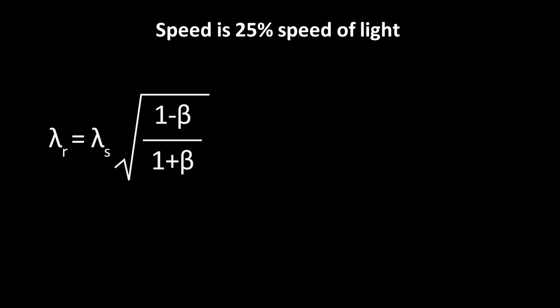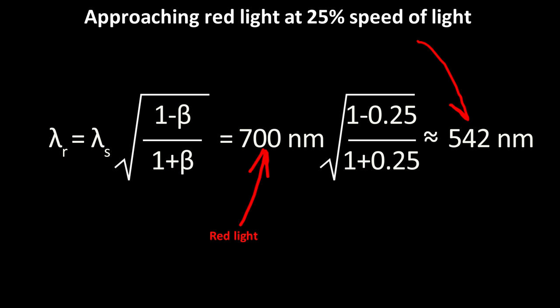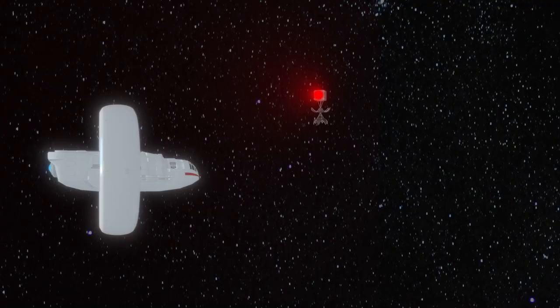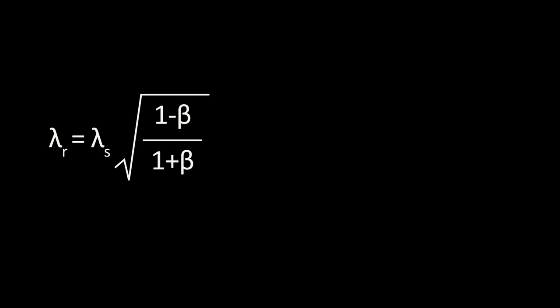Something even more dangerous would happen if you approach the traffic light just a little bit faster, 25 percent the speed of light. Lambda r in this case would be 542 nanometers, which corresponds to green light. So the red stoplight would look like a green go light. Now what would happen if we pass the traffic light at the same 20 percent the speed of light? How would the red light look from the rear window?